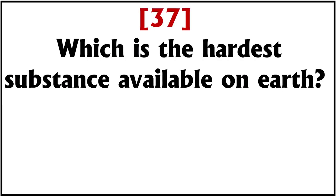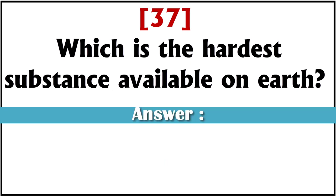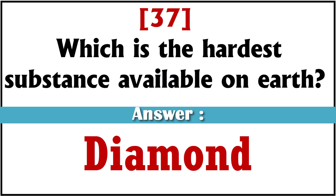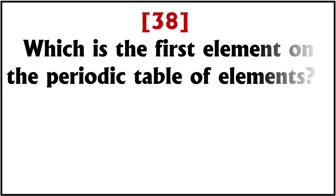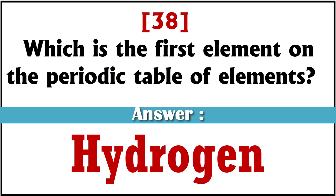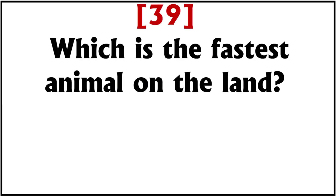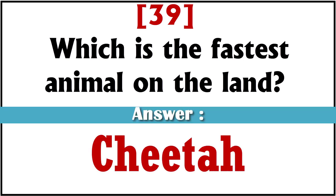Which is the hardest substance available on earth? Diamond. Which is the first element on the periodic table of elements? Hydrogen. Which is the fastest animal on land? Cheetah.